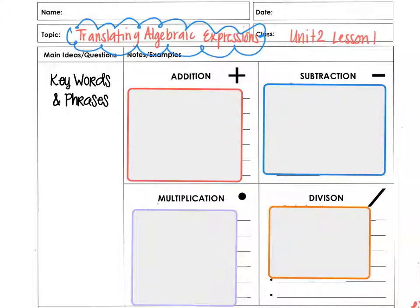Algebraic expressions are expressions like x plus 3 or 2x plus 7. They're basically expressions in mathematics that have variables in them. There are keywords in the English language that tell us what type of operators we should be using.